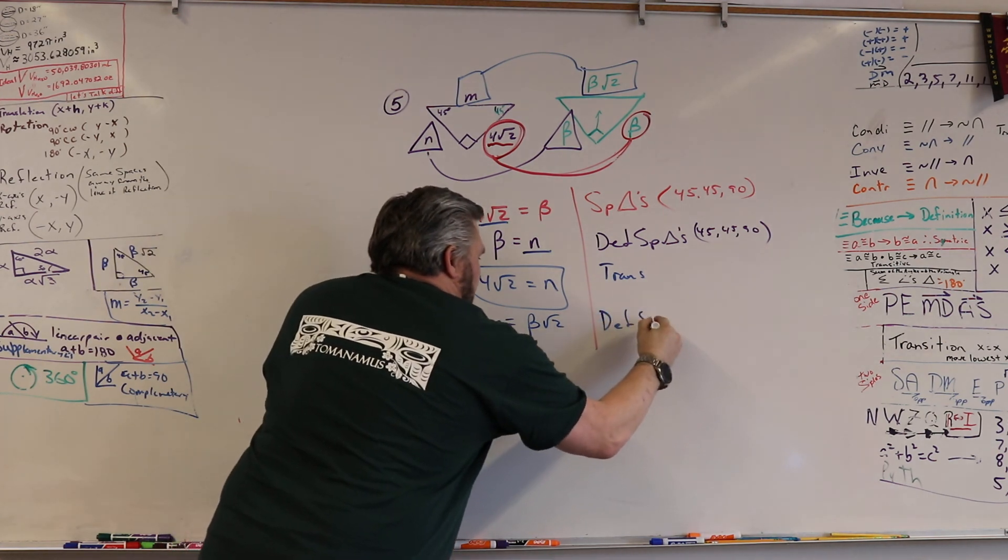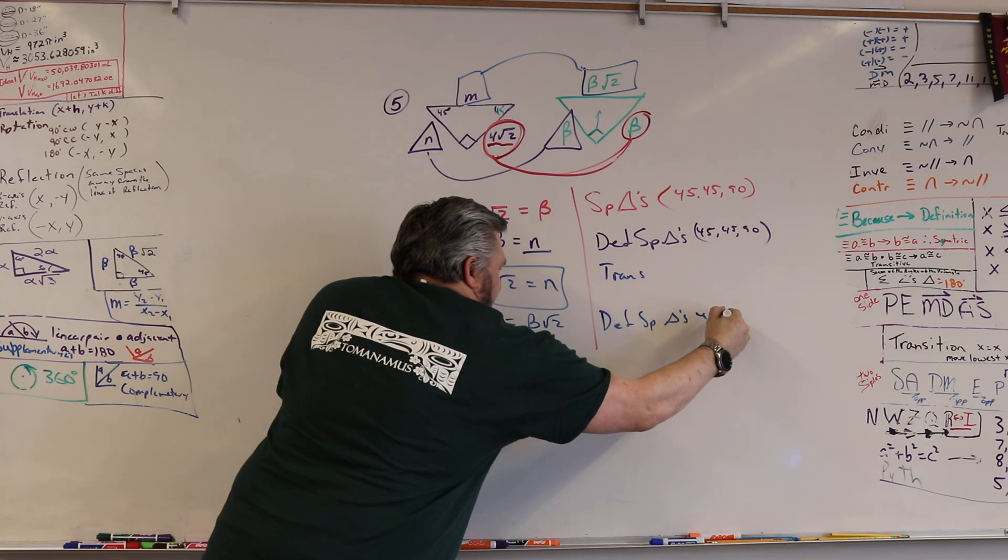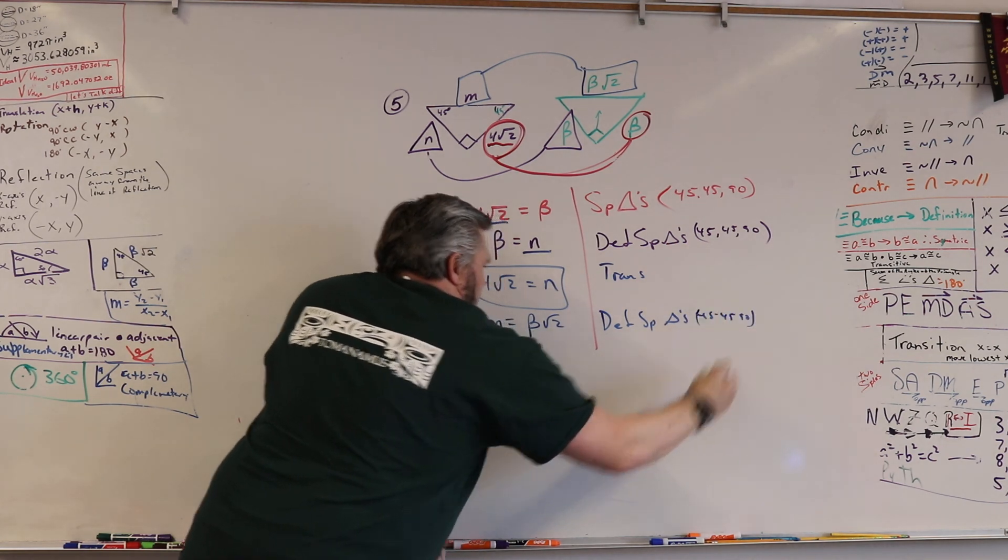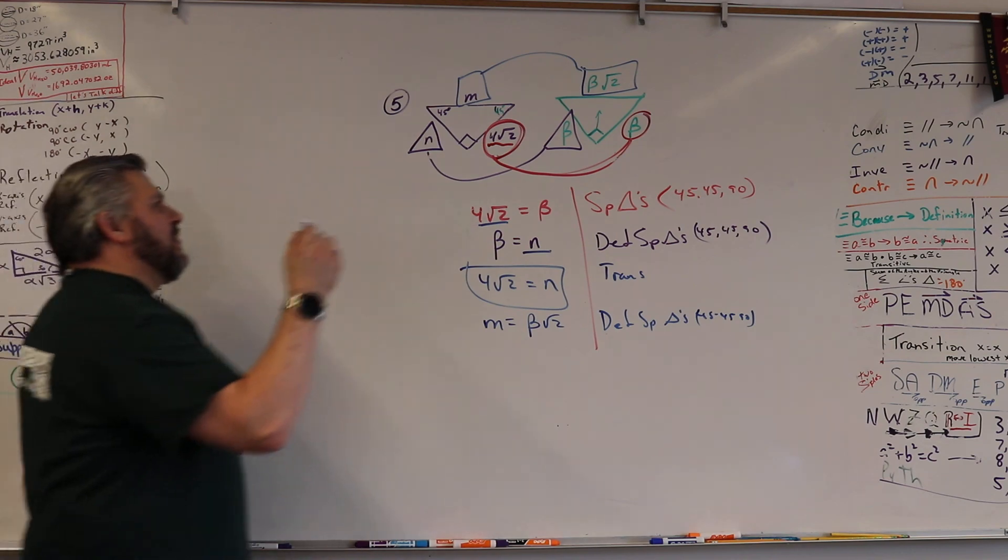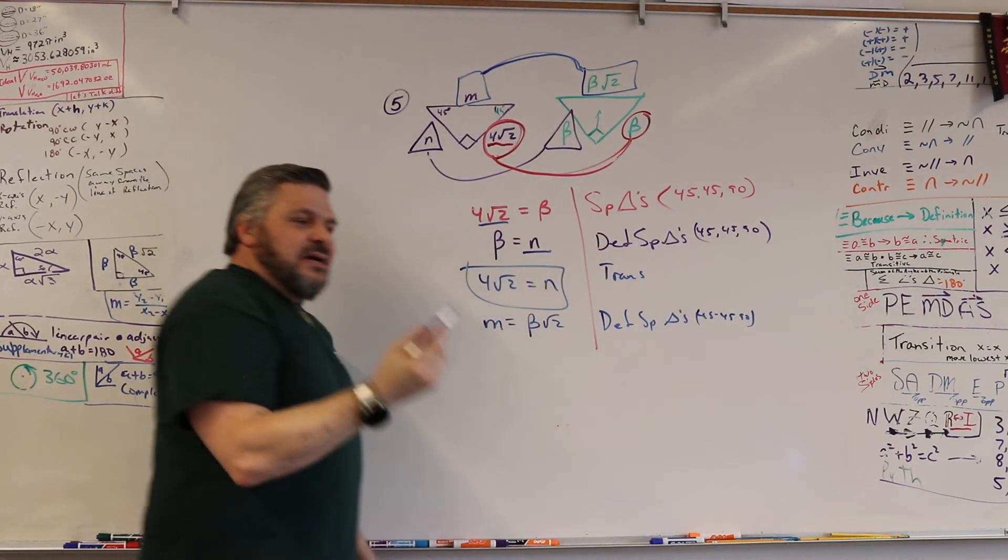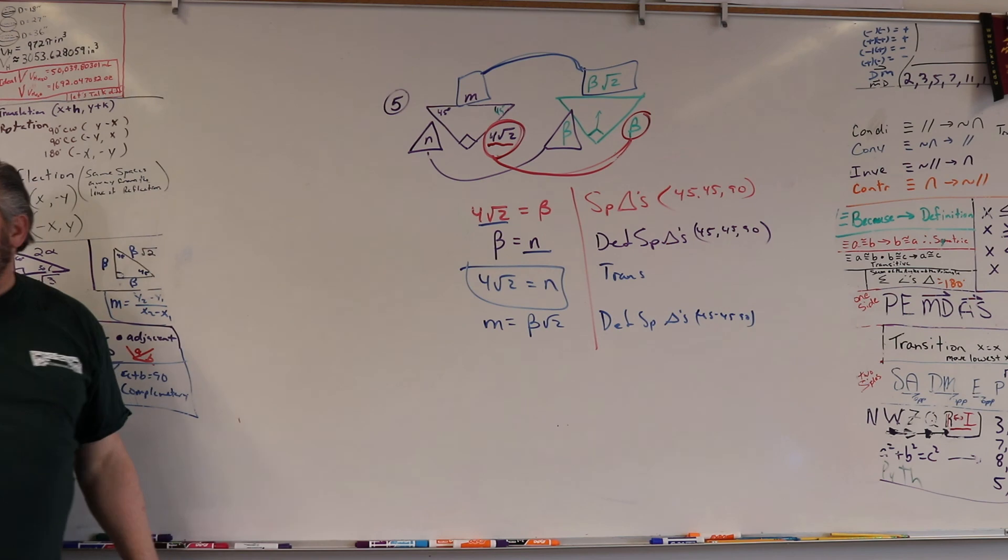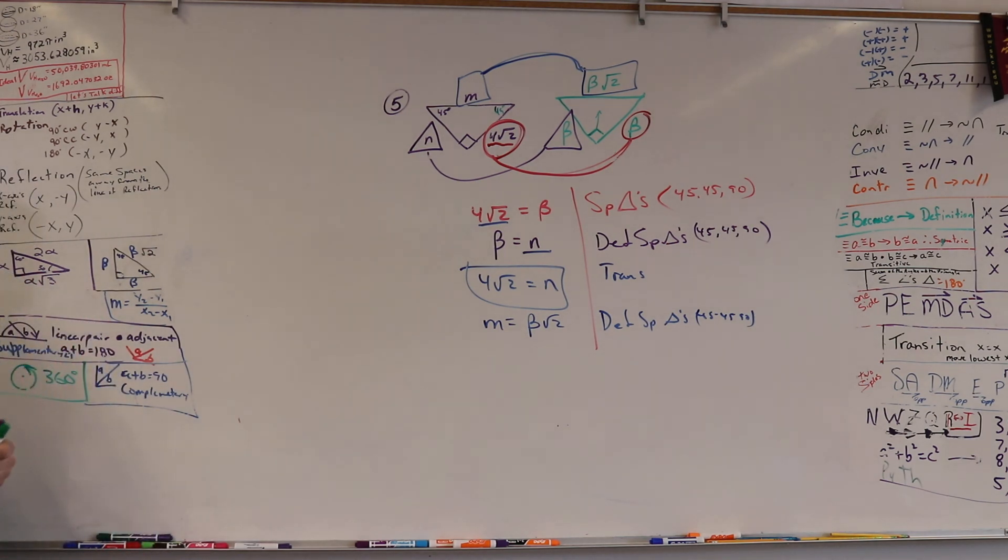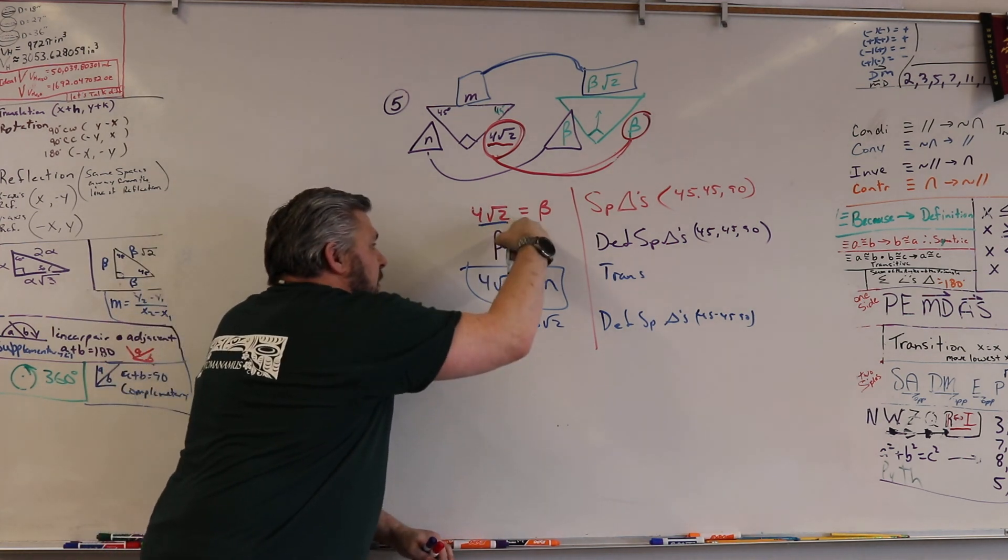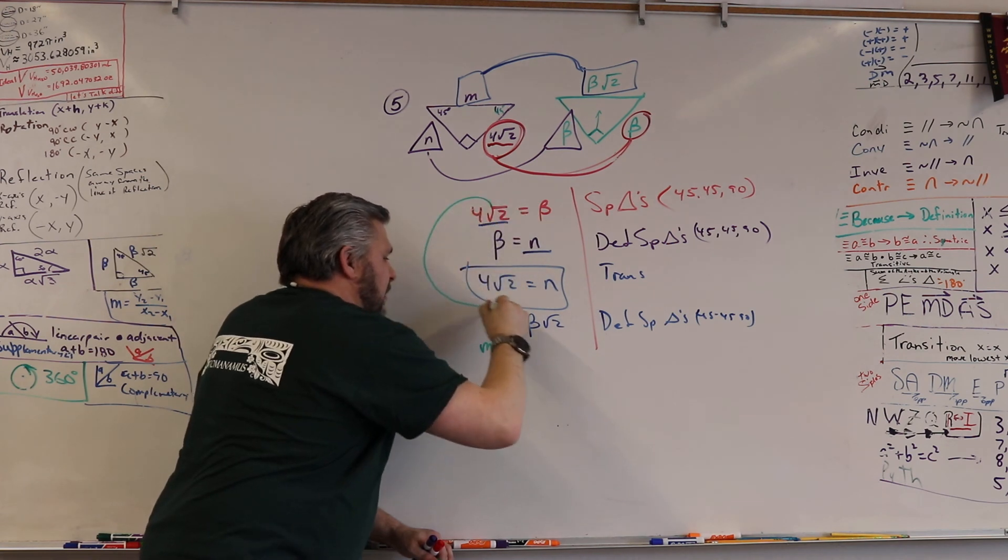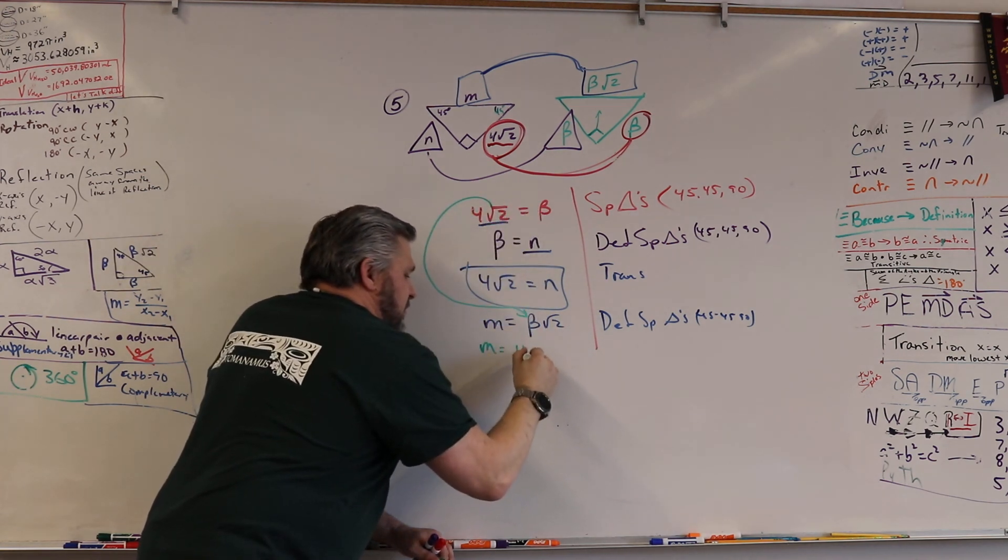M equals beta square root two. Definition, special triangles, 45-45-90. Would I want to change the color of that? Yeah, I would. The only reason I kept it blue is because this was blue. I was about to change the color, but because that was blue... So yeah, I would change the color if I was here. And then I'm going to go with what? What's beta? Beta is something square root of three. Beta, right here, is what? Four square root two, right?